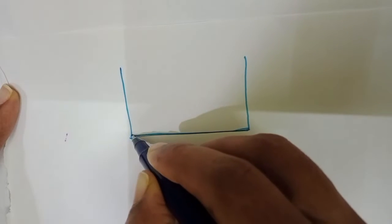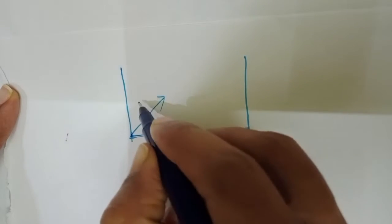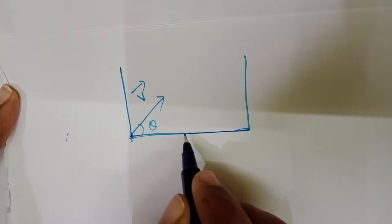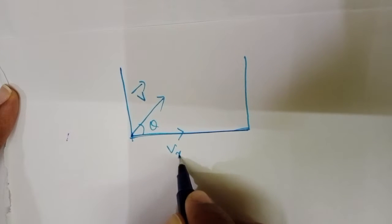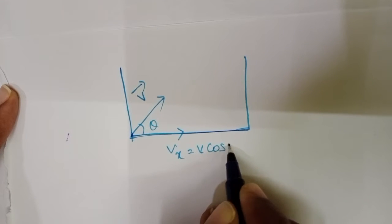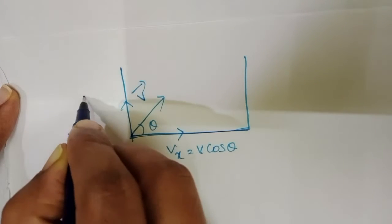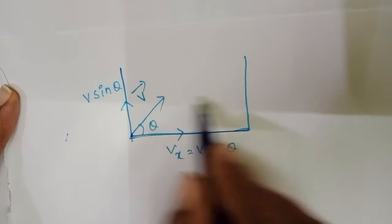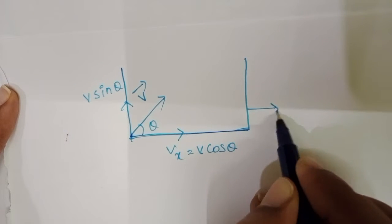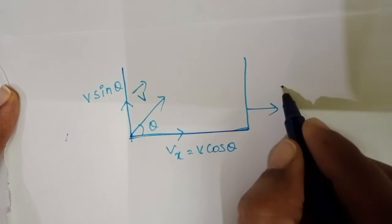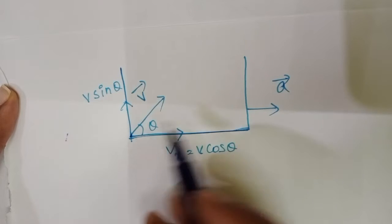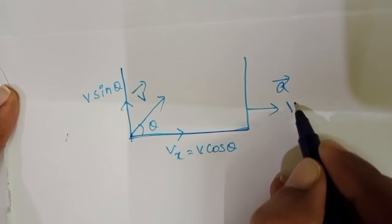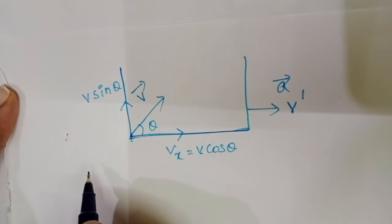When a particle is projected from a trolley with initial velocity v, the horizontal component of velocity vx equals v cos theta and the vertical component equals v sin theta. The trolley is moving along the horizontal direction with a certain acceleration, so it possesses a horizontal velocity — let it be v dash.